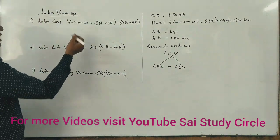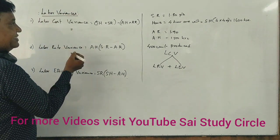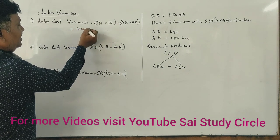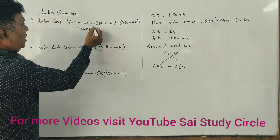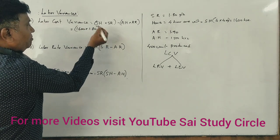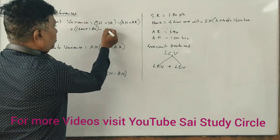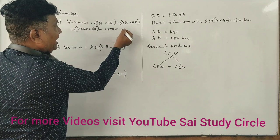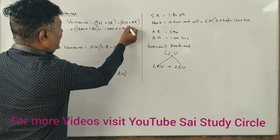The formula is labor cost variance: standard hours is 1,600, standard rate is 1.80, minus actual hours is 1,500, and actual rate is 1.90.